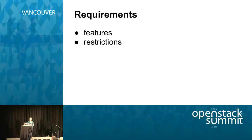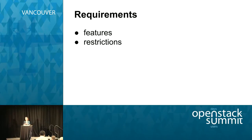As developers, we have a few requirements that constrain how we choose our back-end implementation. We need certain features — for example, we need to be able to manage Keystone users, so whatever implementation we use has to be capable of that. The most important restriction is that we have to use Ruby. There are other general restrictions involved in that as well.